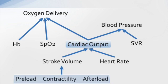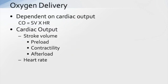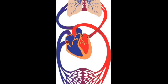When a patient does not have enough oxygen getting to the tissues, it's important that we look at all of these different components rather than just one or two. Oxygen delivery is dependent upon cardiac output, which is the product of stroke volume times heart rate. Stroke volume is made up of preload, contractility, and afterload — all of which must be optimized along with heart rate, as cardiac output is just one piece of the big puzzle of oxygen delivery.